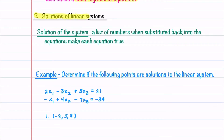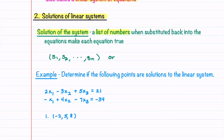A solution of a linear system is a list of numbers that, when substituted back into the equations, satisfies all of them. We can write a solution as an ordered list of values s1, s2, through sn, or explicitly as x1 equals s1, x2 equals s2, all the way through xn equals sn.